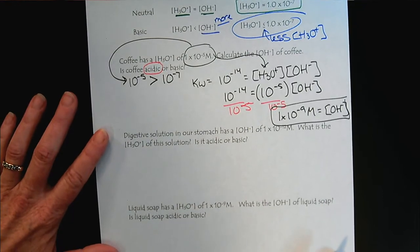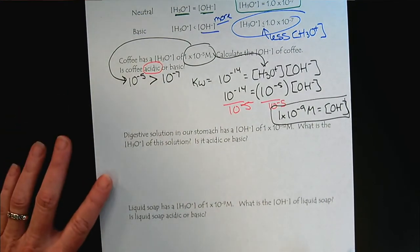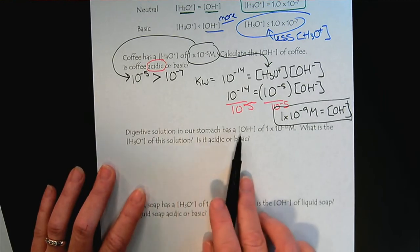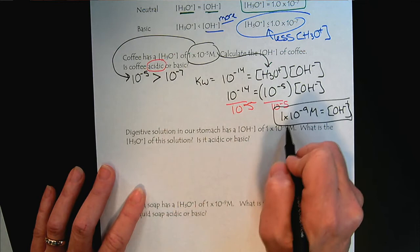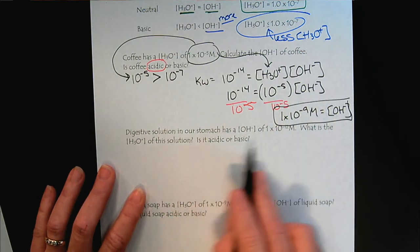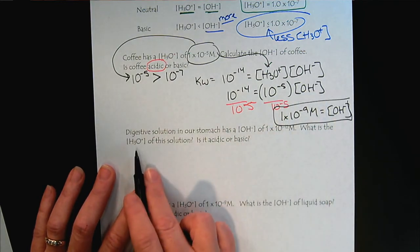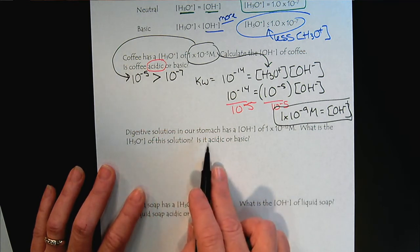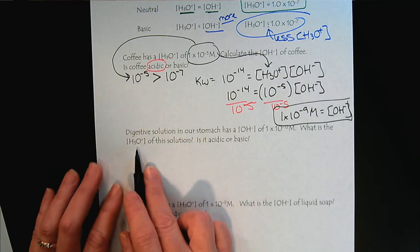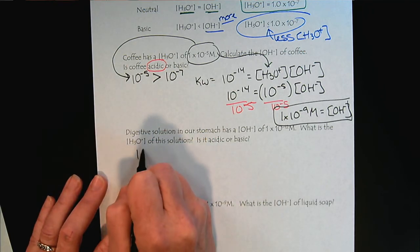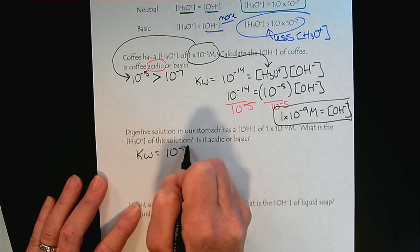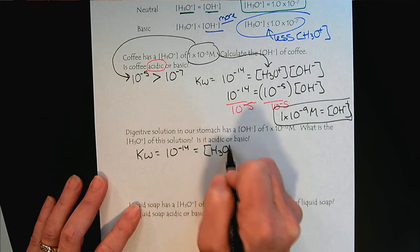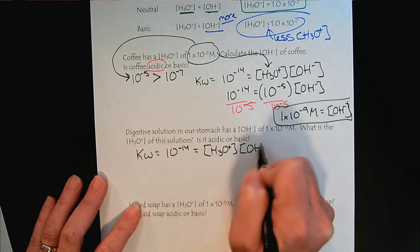We'll try two more, and that'll wrap up this tutorial. So the digestive solution in our stomachs has a hydroxide concentration of 10 to the minus 12. What is the hydronium ion concentration of this solution? So I'm going to wait on the acidic or basic part until we've done our calculation. So it's going to be exactly the same. The KW always equals 10 to the minus 14, and it always equals the hydronium times the hydroxide.